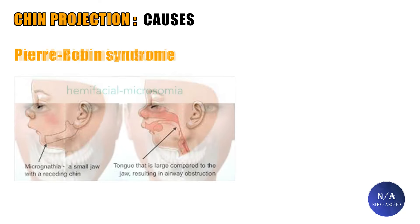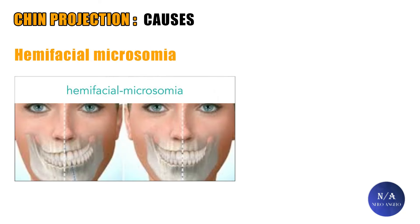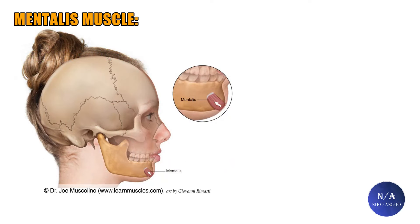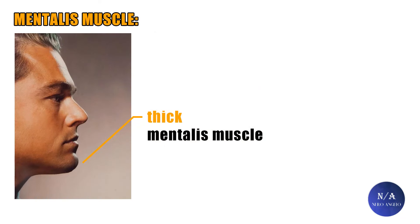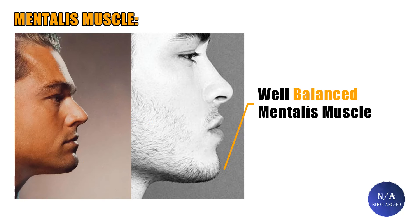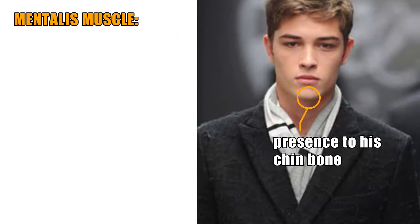One side of the lower face not developing properly, for example hemifacial microsomia, is another cause. Your mentalis muscle, otherwise known as your chin muscle, affects the harmony of your lower third or mouth area. Too pudgy or thick of a mentalis muscle can make your chin look less sharp and thus less attractive. For example, comparing these two: yes, their chin projection is different too, but look at the pudginess of Leo's chin muscle from the side view. Chico has a perfect balance for his mentalis muscle, not too pudgy, allowing his chin to look sharp from the front and giving presence to his chin bone.